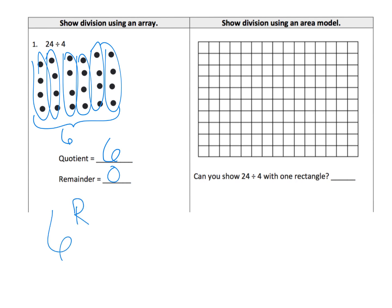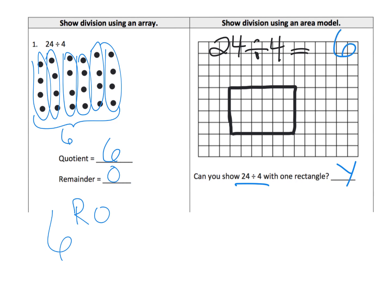Back in the olden days we would say 6 remainder 0, and that's still allowed. Now, what would that look like in the area model? The area model is going to have a height of 4. And we're going to have a width of 6. I think of it as: we've got 4, plus another 4 is 8, plus another 4 is 12, skip counting by 4s until we get close to 24 without going over. So we can show 24 divided by 4 with one rectangle, and the answer is it's going to have a width of 6 units.